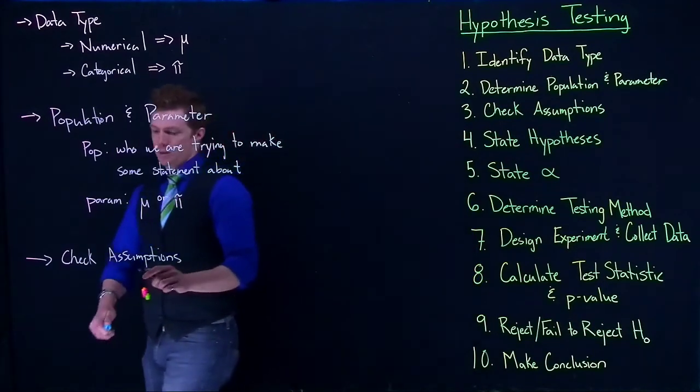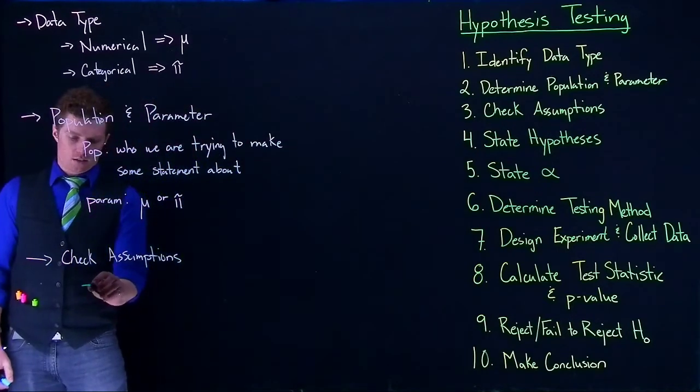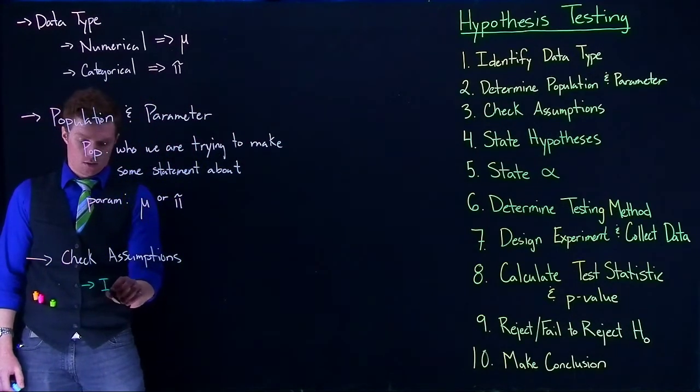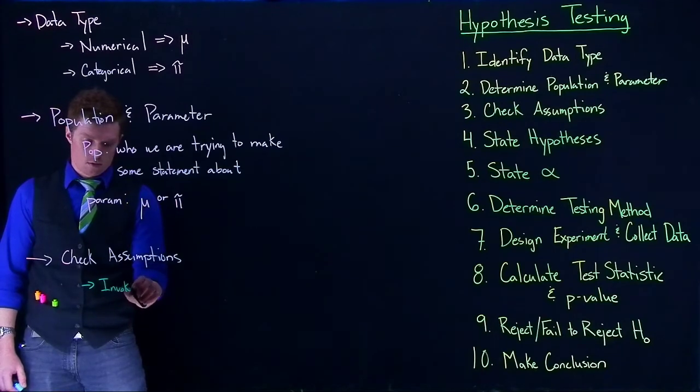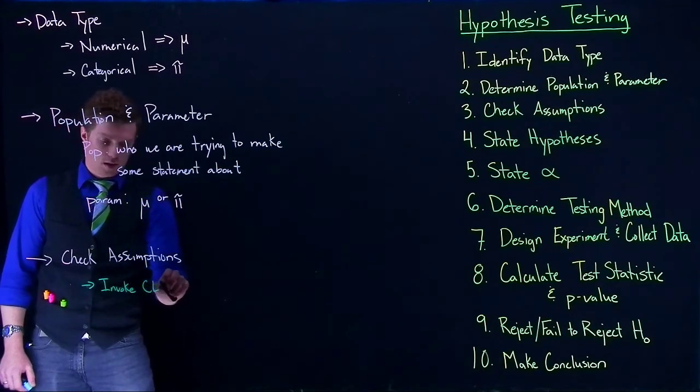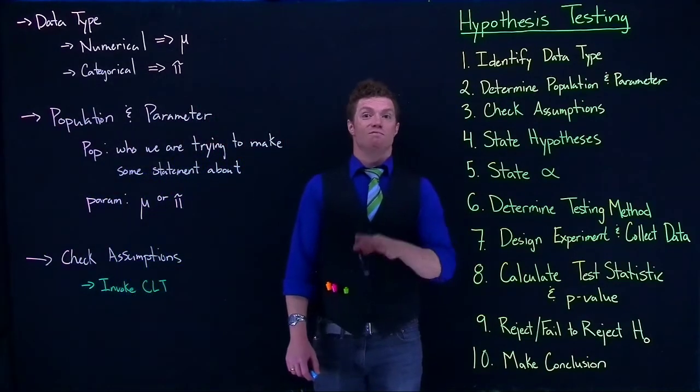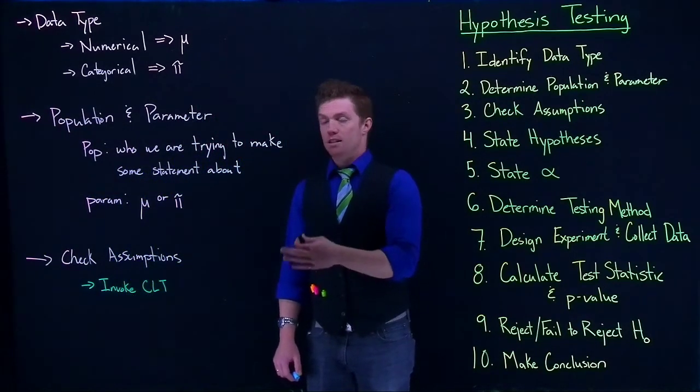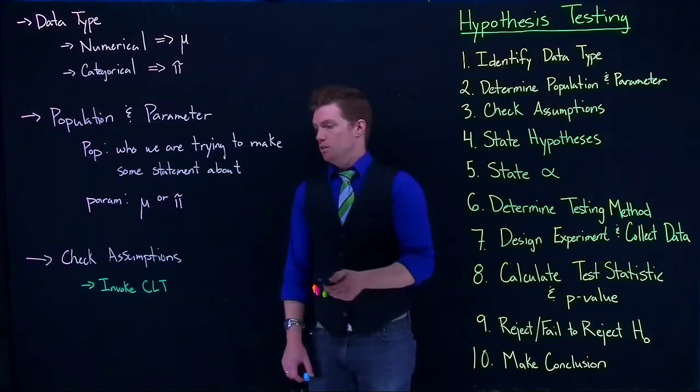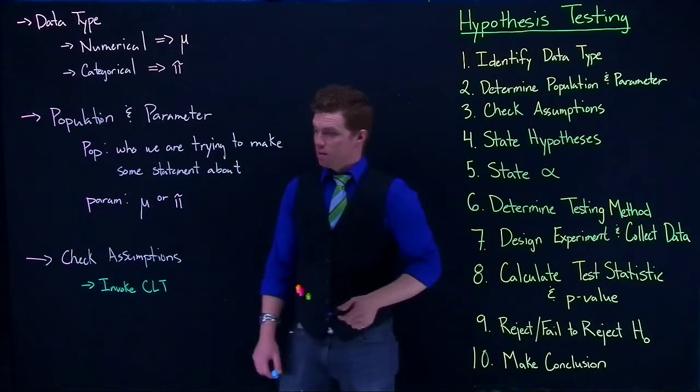Some of those assumptions that we need to check are things like can we invoke the central limit theorem? So all those requirements for the central limit theorem—they still hold. We still have to be meeting these requirements. So we've got to check the central limit theorem.